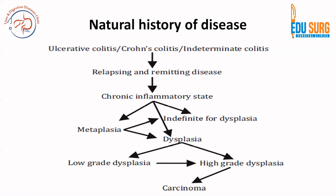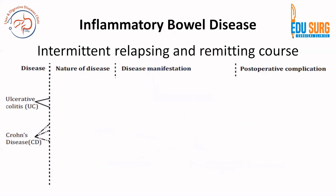In the natural history, the patient will have repeated episodes of colitis. This results in a chronic inflammatory state in the colon or intestine, which can lead to metaplasia or directly into dysplasia. This dysplasia can be low grade or high grade, or progress from low grade to high grade dysplasia, and finally results in carcinoma. This is a simplified but important natural history of idiopathic inflammatory bowel disease.